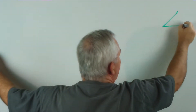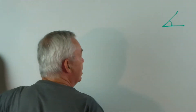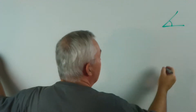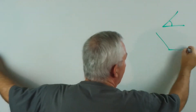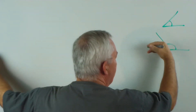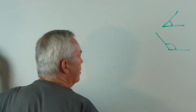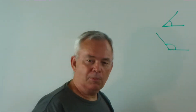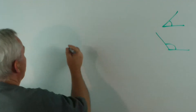Remember, an acute angle is an angle less than 90 degrees, so it's sharp. An obtuse angle is an angle greater than 90 degrees but less than 180 degrees, and we call it a blunt or an obtuse angle.